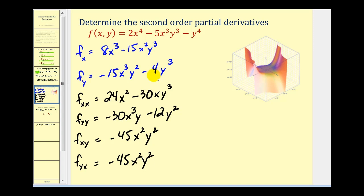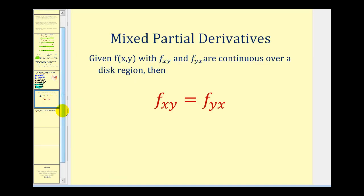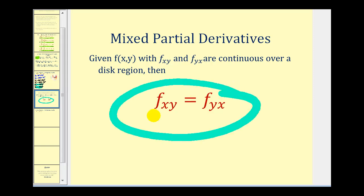For the other mixed partial f_yx, we differentiate the first partial with respect to y, then with respect to x. Multiplying by three gives negative 45x²y², and the other term becomes zero. Notice that the two mixed partials are equal to each other — and in fact they will always be equal to each other, as long as they are continuous over a specific region. So in the future, if we find one, we also know the other.